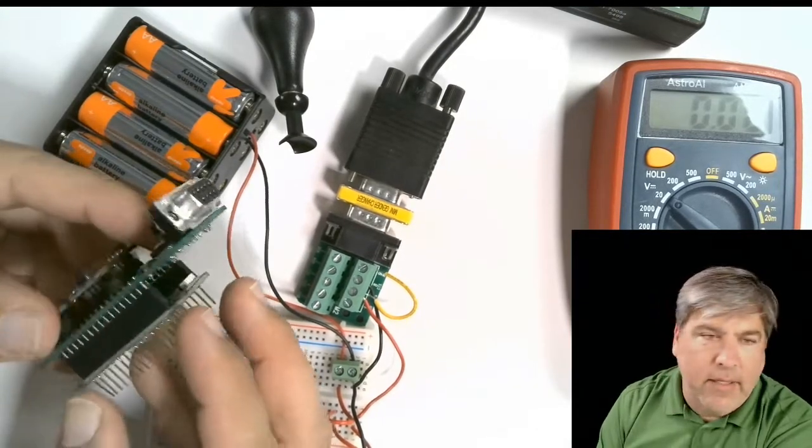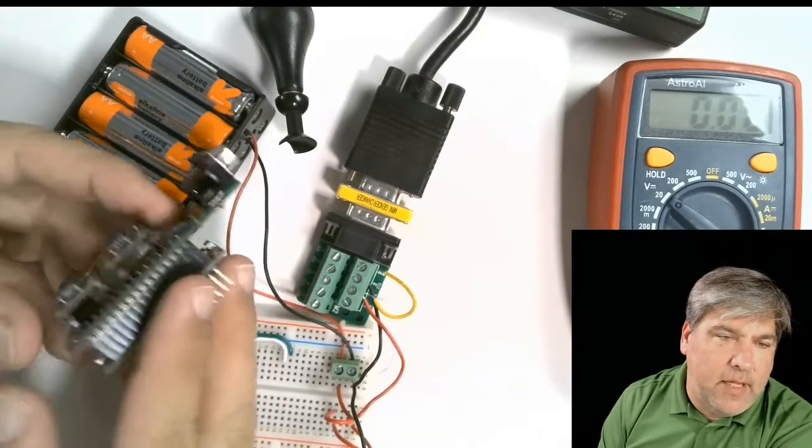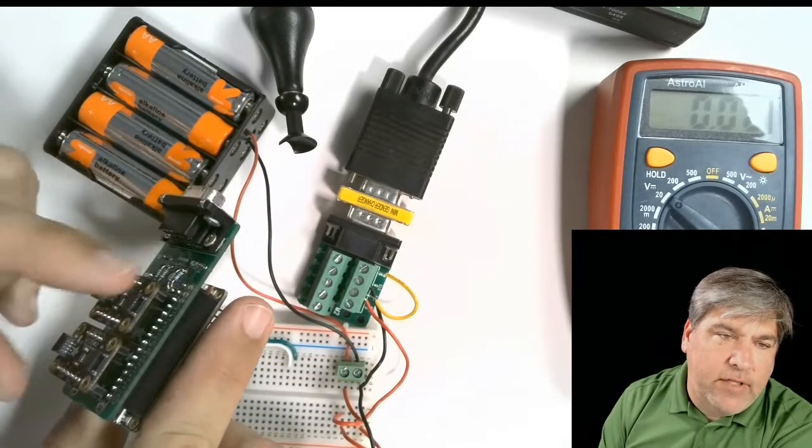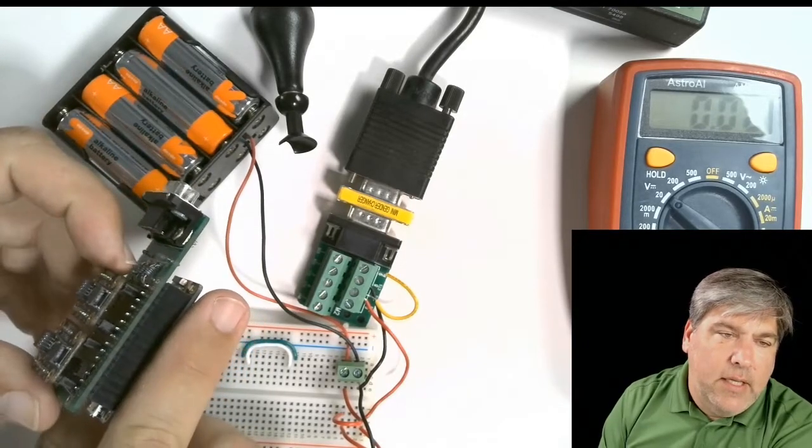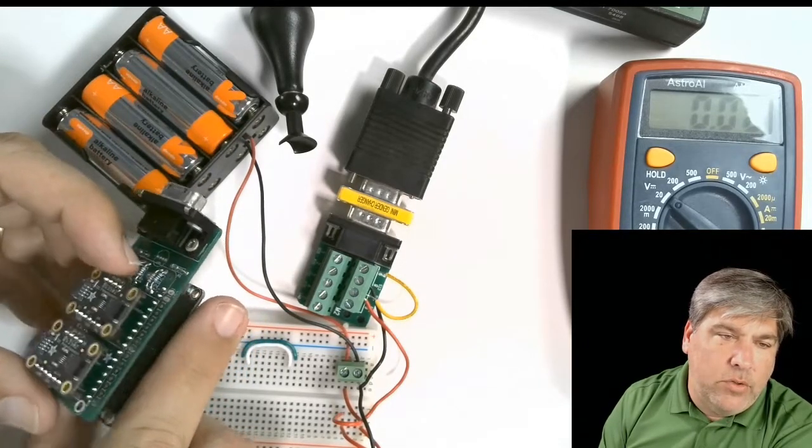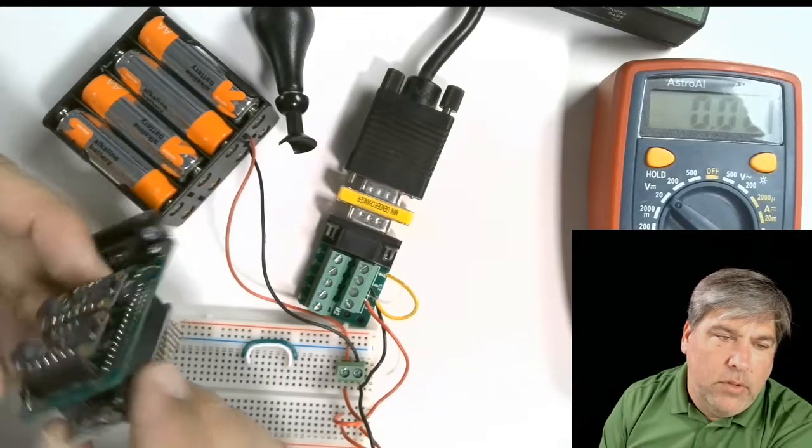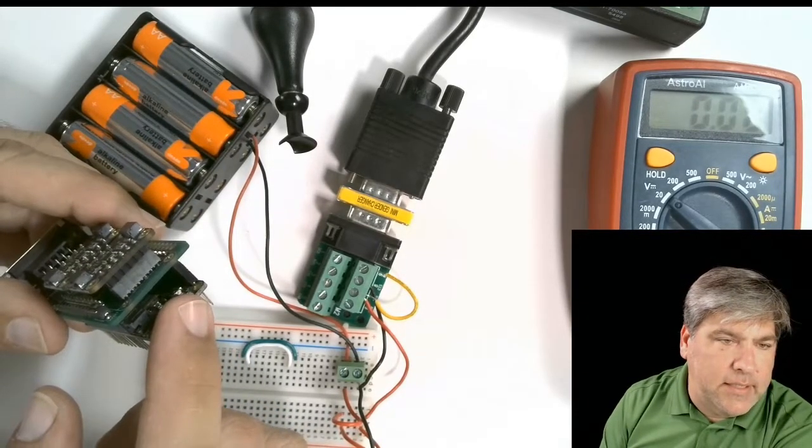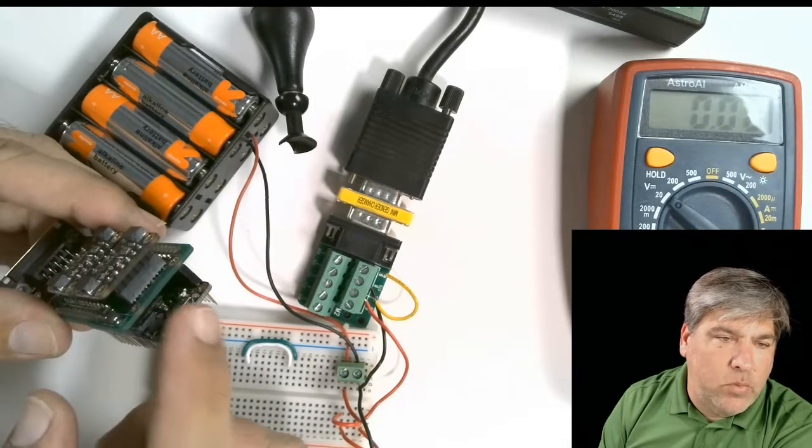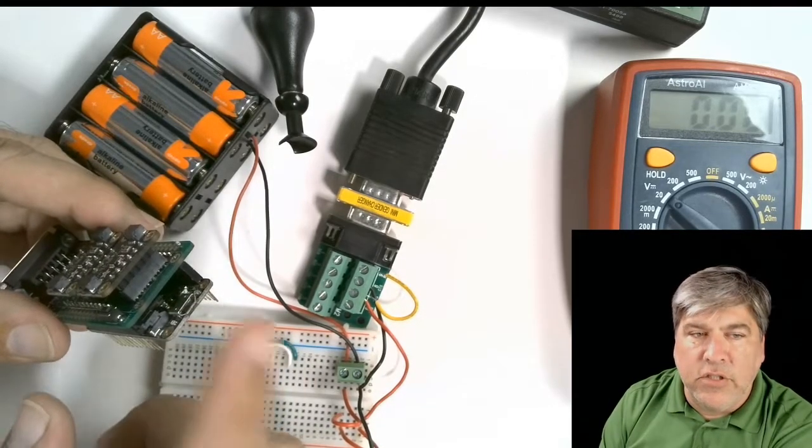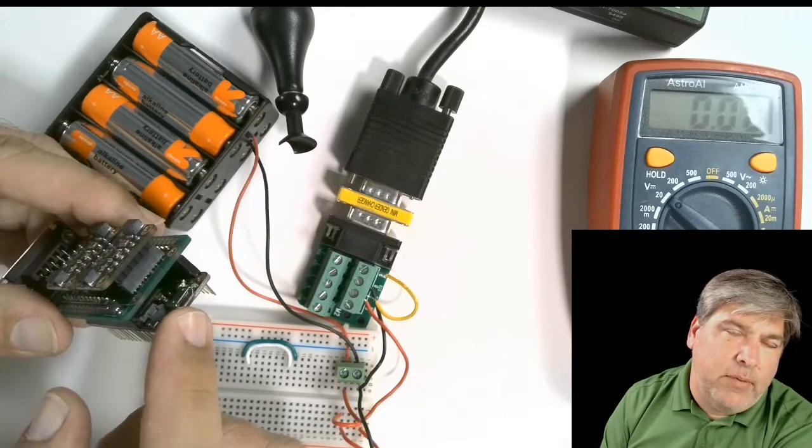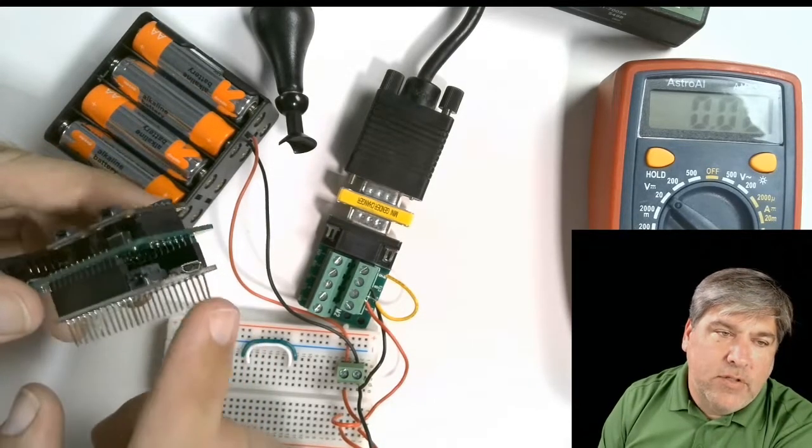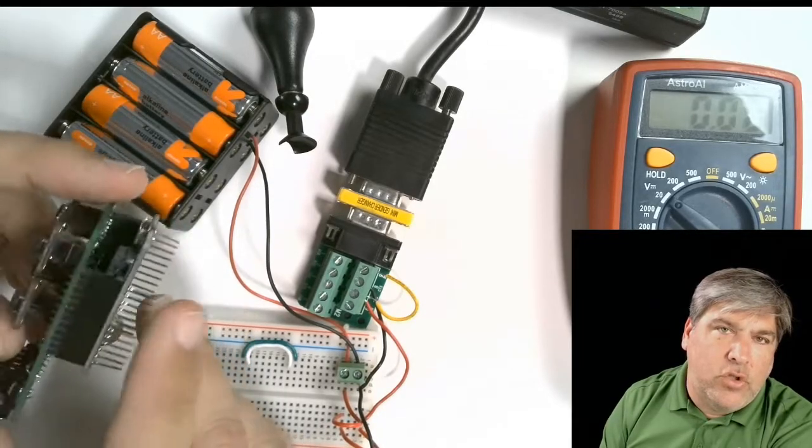The microcontrollers we would talk about primarily would be ones like this, so this is a feather. If we design the board to take a feather, we're really being flexible. This feather has Bluetooth on it, so it could be a mouse to go into an iOS device. Other feathers are just cheaper that don't have either.